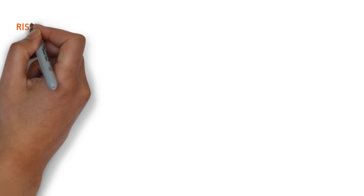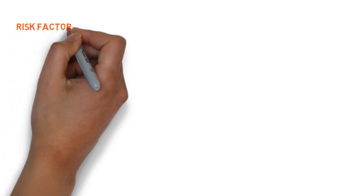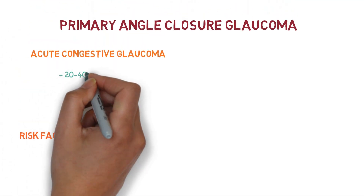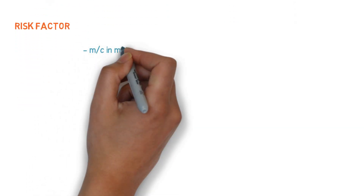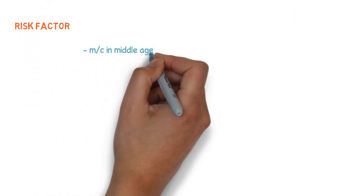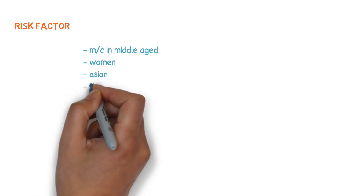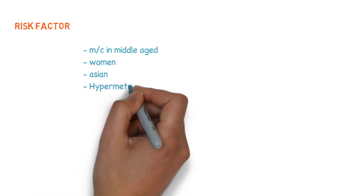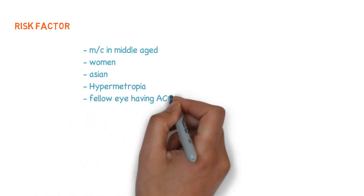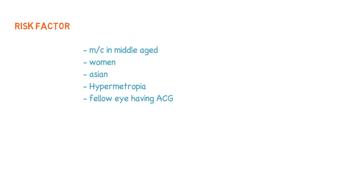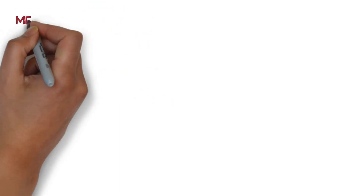Let's talk about the risk factors. It is most common in middle-aged individuals, around 20 to 40 years. Generally it occurs in women, Asians, and those having hypermetropia. And if the fellow eye has had acute congestive glaucoma, it is also a risk factor for the other eye.